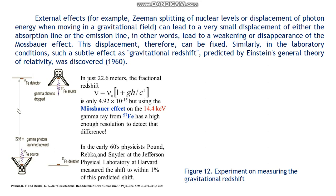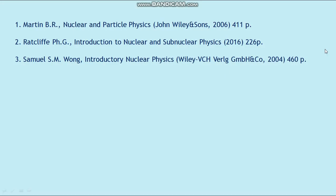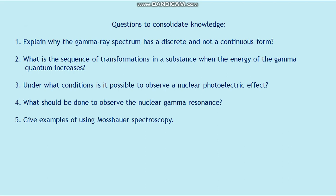Figure 12 shows the experiment of measuring the gravitational redshift. Questions to consolidate knowledge: First — explain why the gamma-ray spectrum has a discrete and not a continuous form. Second — what is the sequence of transformations in a substance when the energy of the gamma quantum increases? Third — under what conditions is it possible to observe a nuclear photoelectric effect? Fourth — what should be done to observe nuclear gamma resonance? Fifth — give examples of using Mössbauer spectroscopy.